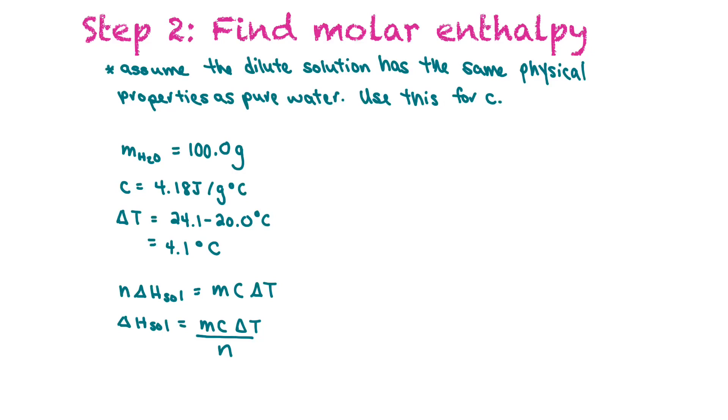Delta H equals 100 grams times 4.18 joules per gram degrees Celsius times 4.1 degrees Celsius, all divided by 0.10067 moles. That equals 1.7 times 10 to the power of 4 joules per mole.